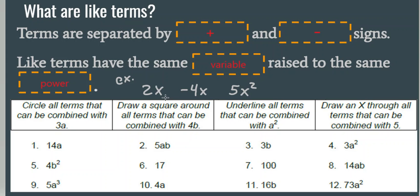I can see that 2x and negative 4x are like terms, because they have the same variable and they both don't have an exponent. Whereas 5x squared is not a like term for these two, because even though it has the same variable, it has an exponent of 2. So this would not be a like term for 2x and negative 4x. Like terms have the same variable raised to the same power or exponent.